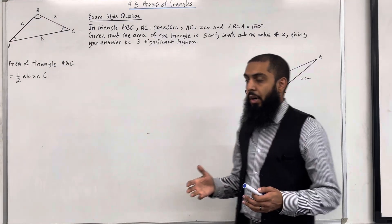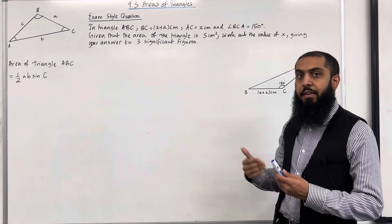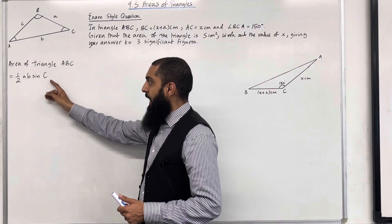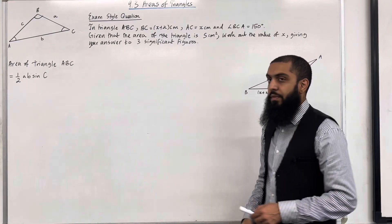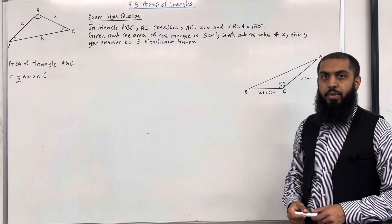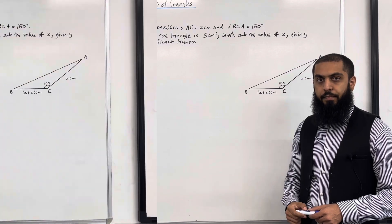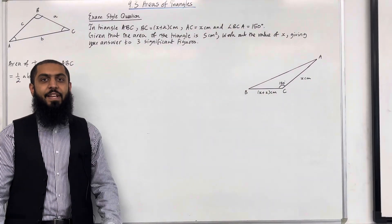Now to work out the area of triangle ABC, we apply the formula area equal a half AB sine C. This is the key fact of 9.3 areas of triangles. I'll be implementing this key fact within this exam style question. Let's have a look at the solution to this exam style question.